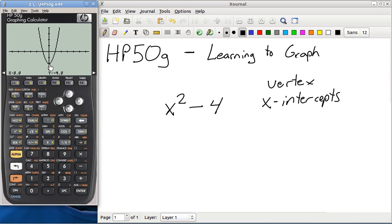When our cursor is at the bottom, it's at the vertex. X is equal to 0, Y is equal to negative 4. Using the right and left arrow keys, you can move that cursor right or left. I'm going to move it up here to the x-axis. Now you see that x is equal to negative 2 when y is equal to 0. That's one of your x-intercepts right there.